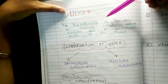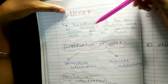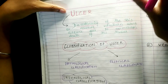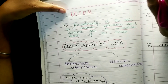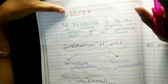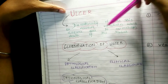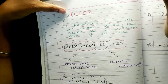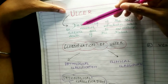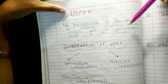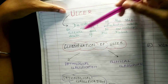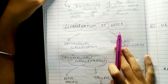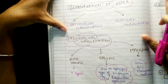Ulcer is nothing but a discontinuity of the skin or mucous membrane which occurs due to the microscopic death of the tissue. That's the standard definition of ulcer. If you talk about fracture, in fracture there is discontinuity of the bone. So ulcer is discontinuity of the skin or mucous membrane which occurs due to microscopic death of the tissue — this is the important definition.